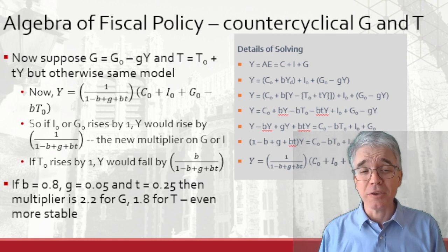Where little t is between 0 and 1. That's the tax rate. Otherwise, it's the same model as before.